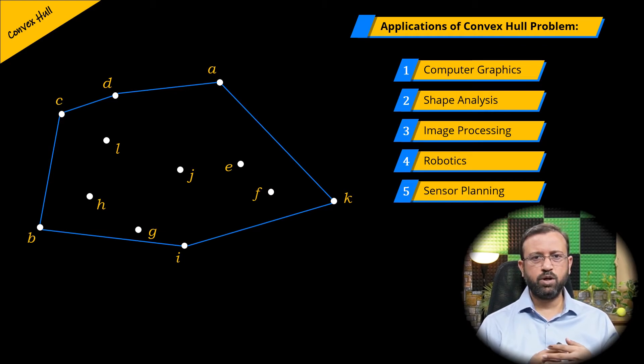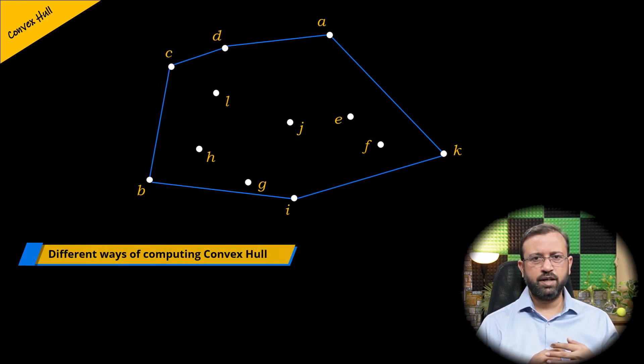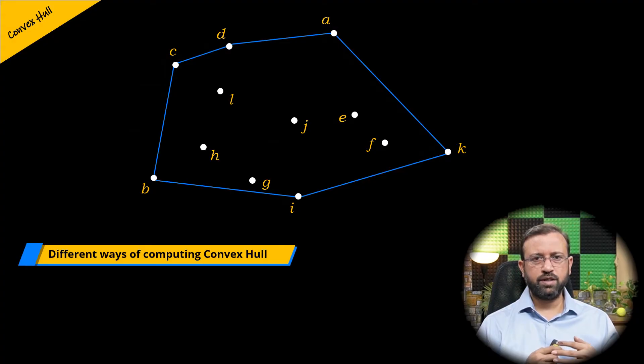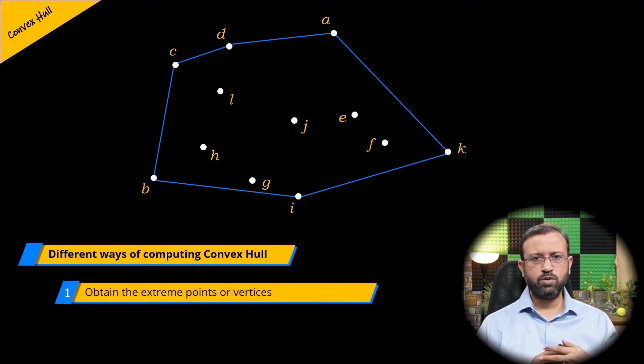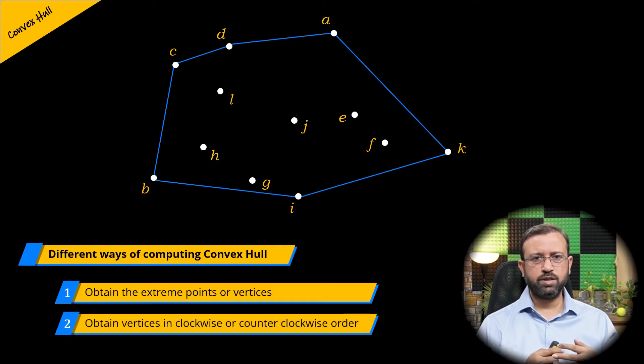Let us look at how to compute the convex hull. There are two ways of finding the convex hull. The first one is to obtain the vertices or the points of the convex hull using the extreme points. The other way is to obtain the vertices of points of the convex hull in some order, clockwise or counterclockwise.